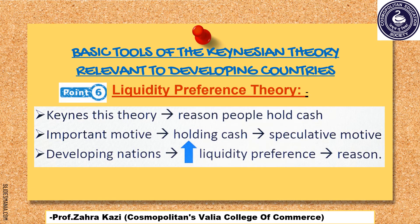The last point, number 6, is Liquidity Preference Theory. Keynes' Liquidity Preference Theory explains why people like to hold cash. One of the most important motives to hold cash is Speculative Motive, which means people's desire to hold cash in case an attractive investment opportunity arises. People like to hold cash under speculative motive to take advantage of fluctuations in bond and stock markets. But in developing economies, it is observed that Liquidity Preference is high — that is, people like to hold cash — not due to speculative motive, but due to market uncertainties and fear, particularly in emergency situations.